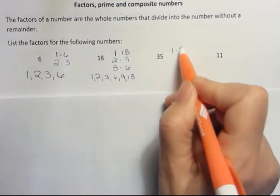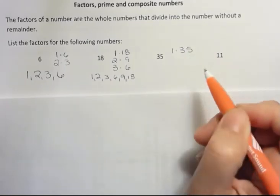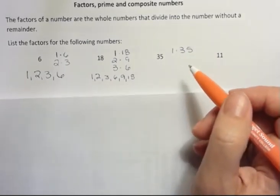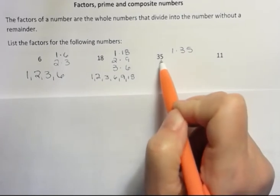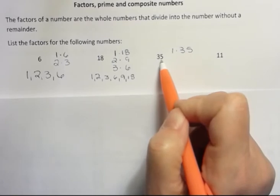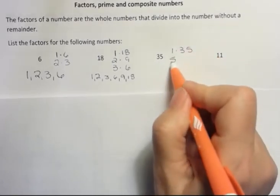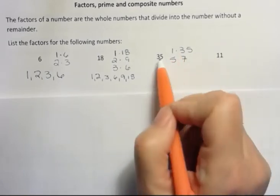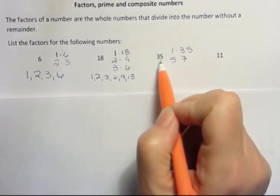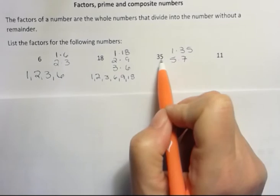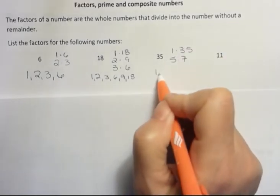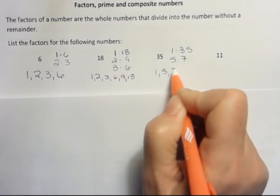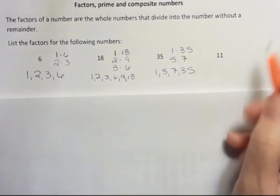What about 35? Well, 1 times 35. Always remember the 1 and the number itself. People tend to leave that off. 2 doesn't go, because this isn't even. 3 doesn't go. 33, 36, but not 35. 4 does not go into 35. 5 does. 5 times 7. 6 does not. No even numbers go into any odd numbers. Well, 6 times 6 is 36, which is greater than our number, so I know I've gone far enough. 1, 5, 7, and 35. Those are the factors for 35.